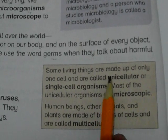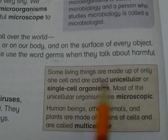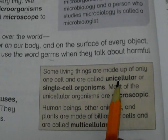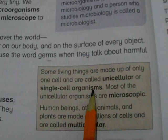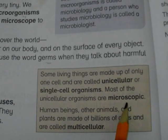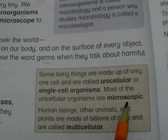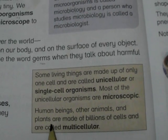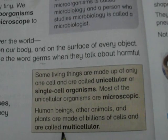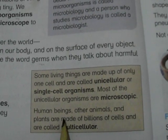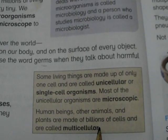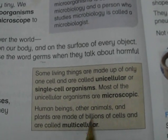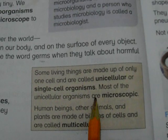Some living things are made up of only one cell and are called unicellular, or single-cell organisms. Most unicellular organisms are microscopic. Human beings, other animals and plants are made of billions of cells and are called multicellular.